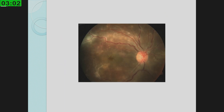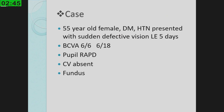If the same patient turns up two to three weeks later and you see a macular star, this is a case of neuroretinitis. The most important thing: neuroretinitis is never associated with MS. So you don't need MRI or MR venogram — just serological assessment and treatment of the cause is enough.